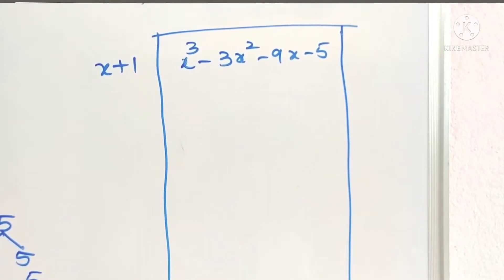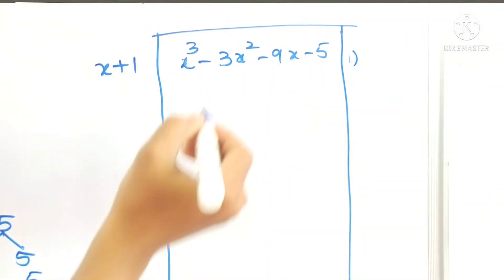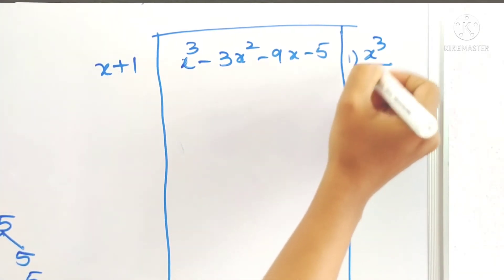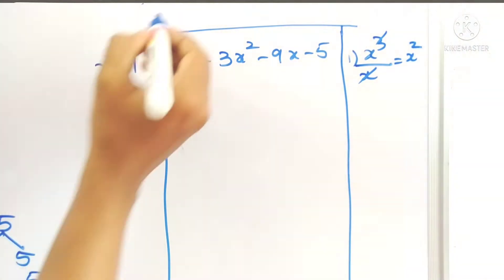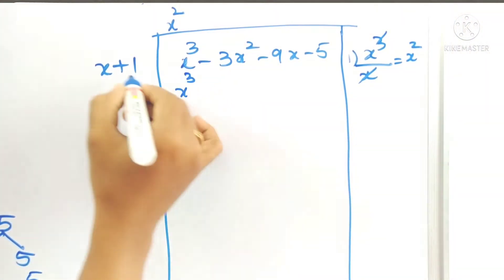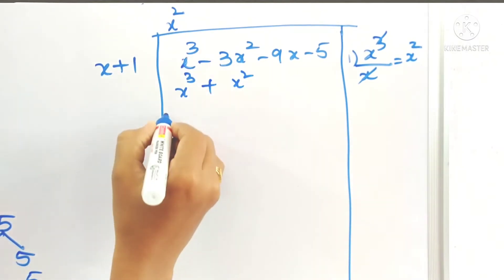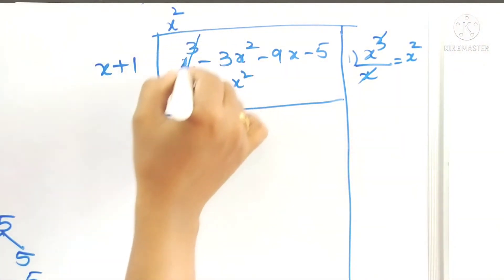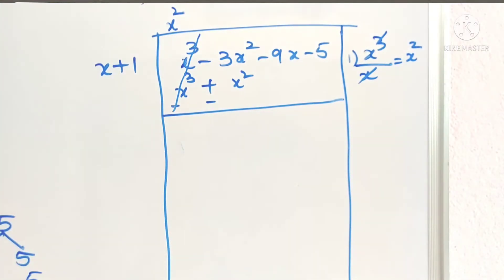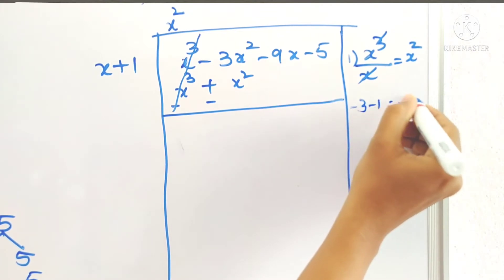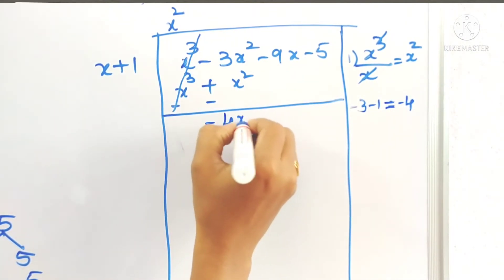Now we have to divide the polynomial by x plus 1 to get the other factors. For the first term in the quotient, take the first term of the dividend divided by the first term of the divisor: x cube by x gives x square. Write x square in the quotient. Multiply: x into x square is x cube, and 1 into x square is x square. Change the signs: plus x cube minus x cube cancels. Minus 3 minus 1 gives minus 4, so this is minus 4x square.